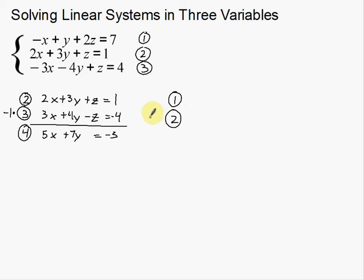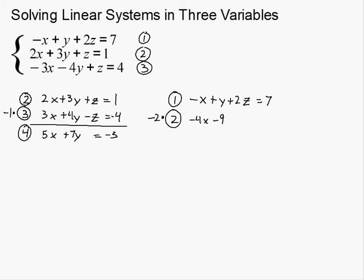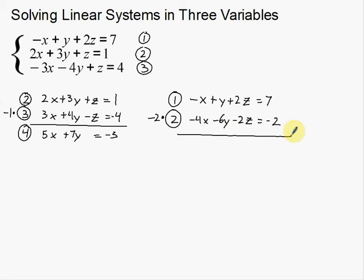I'll take my first equation and rewrite it as is: negative x + y + 2z = 7. Then I take my second equation and multiply by negative two. This gives negative 4x, negative 6y, and negative 2z equals negative 2. Now I add these two equations together: negative 5x + 5y, the z's go away, and 7 minus 2 gives 5. So negative 5x + 5y = 5. I need to keep track of this — this will be my fifth equation.